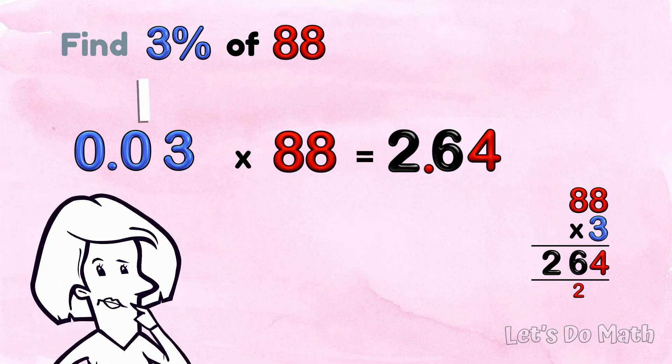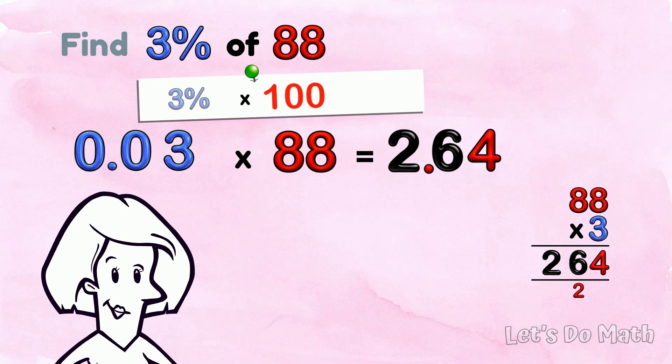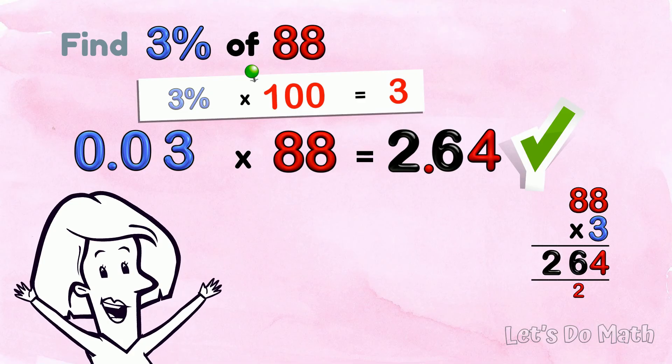Does this answer make sense? 3% of 100 is 3. 88 is a bit less than 100, and our answer is a bit less than 3. So yes, it does make sense!